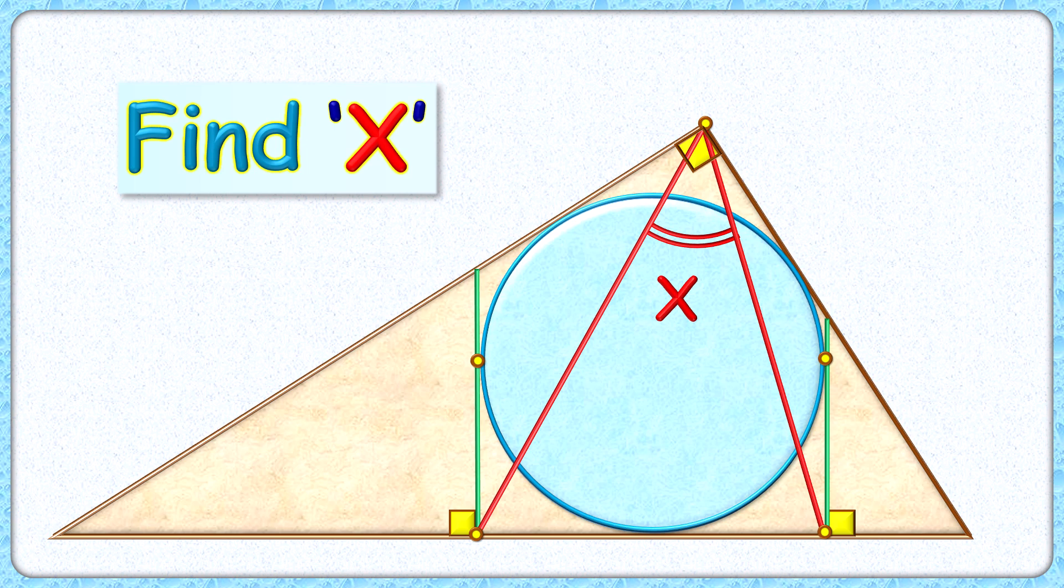Wow, this question looks interesting to solve. Here, given to us is a right angle triangle with an incircle inside it. These green line segments are tangent to the circle and perpendicular to the base. The exciting part is with this limited data, we have to find the value of angle x.